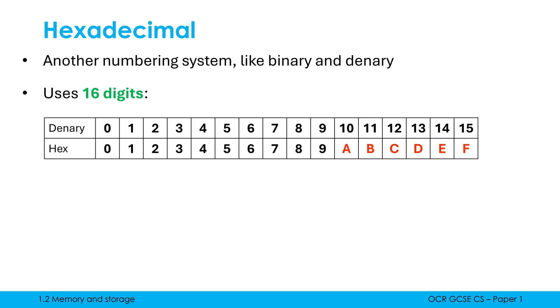So hexadecimal uses 16 digits and the first 10 digits 0 through to 9 are shared between denary and hexadecimal. So 5 in denary is equivalent to 5 in hexadecimal. However we run out of numerical digits to use between 10 and 15.